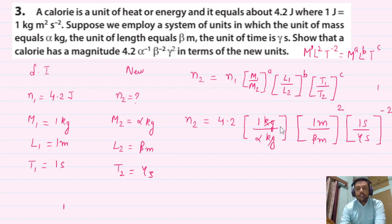kg cancels, meter cancels, second cancels. Your answer is n2 = 4.2 α⁻¹ β⁻² γ².